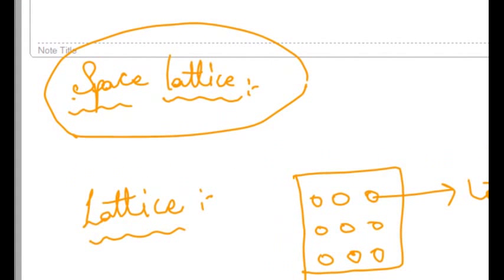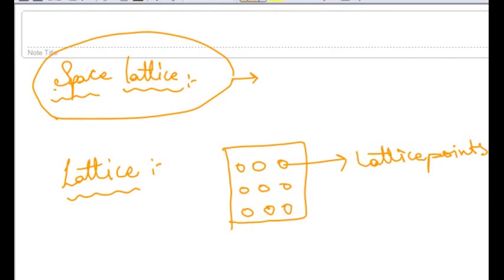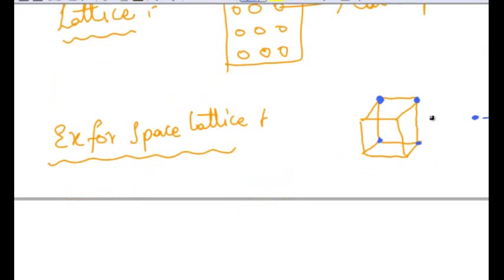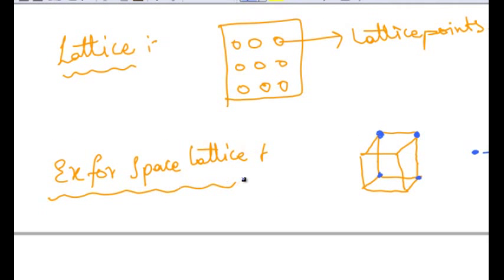Now coming to the Space Lattice. A Space Lattice is defined as the infinite array of lattice points in three dimensions in which every lattice point has the surrounding lattice point identical to every other lattice point. Now let us consider an example for the 3D Space Lattice.